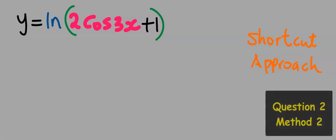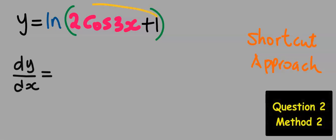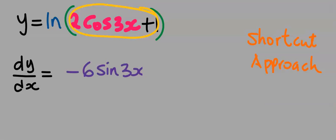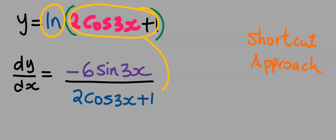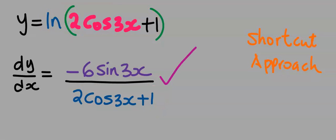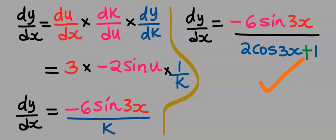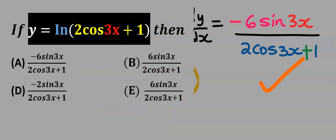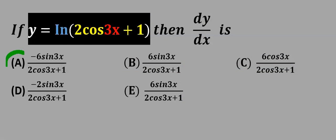Using the shortcut method, differentiate 2·cos(3x) + 1 and you have minus 6·sin(3x). Next for natural log, you bring down everything in front of the natural log without the natural log itself, and this is our dy/dx, which is the same as we obtained earlier. From the options, our answer is A.